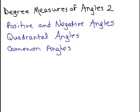This is part two of degree measures of angles and we're going to be talking about positive and negative angles, quadrantal angles, and some commonly used angles.